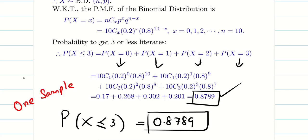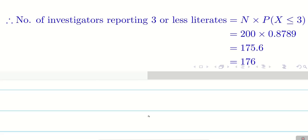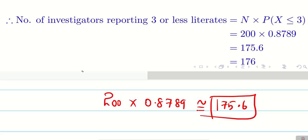This probability 0.8789 is for one investigator sampling 10 people. Since there are 200 investigators doing this, we multiply: 200 × 0.8789 ≈ 176. So out of 200 investigators, approximately 176 would report that the literacy rate is 3 or less in their sample.